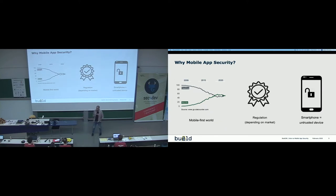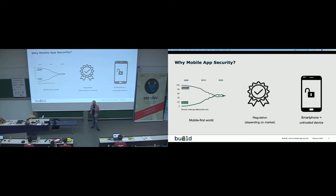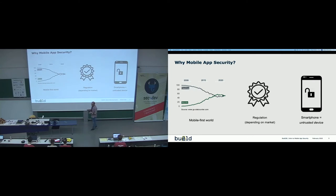Last but not least is the fact that, unfortunately, we have to treat the smartphone as an untrusted device. As application developers, we build our applications, put them on the market, and users download them. We just don't know where they are going to run. It's possible they'll run on devices with old operating system versions that haven't been patched. Our applications might even end up running on a hacker's device trying to reverse engineer them. Unlike web applications, we don't have control over where our application is running.